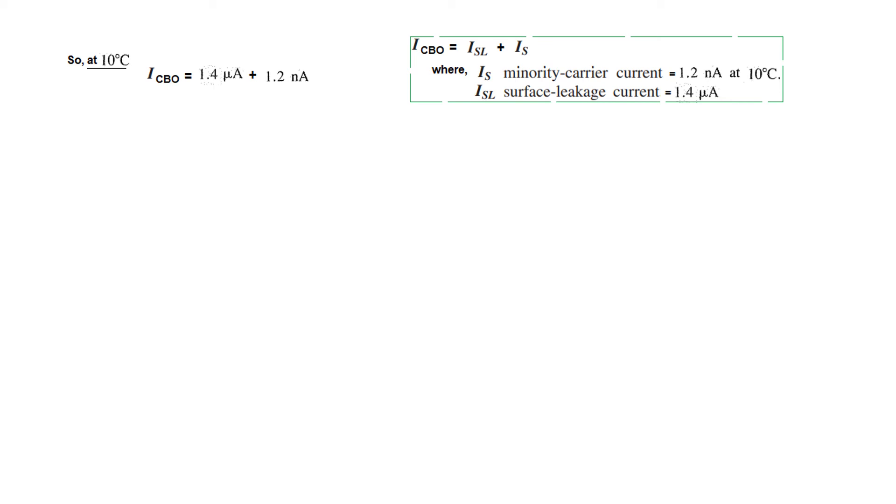Now we will calculate the current at 10°C. First of all, we calculate ICBO, which is the summation of ISL plus IS. ISL is 1.4 microampere and IS is 1.2 nanoampere. So solving, we find this value of ICBO. Now that we know ICBO, we can calculate the collector current IC by this formula. Alpha is 0.992, IE is 0.8 milliampere, and ICBO we just calculated. So the collector current at 10°C is 0.795 milliampere.